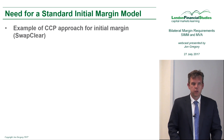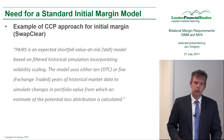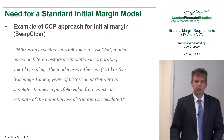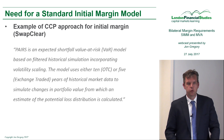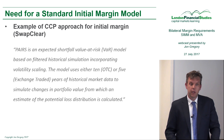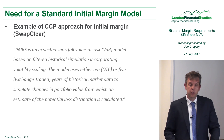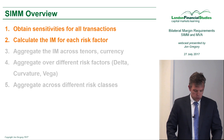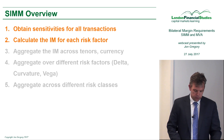In trying to decide on an initial margin model for the bilateral market, a fairly obvious place to start might be to look at what central counterparties, or CCPs, do — because CCPs have obviously been clearing. So let's just pause there and see an example of how that's done.